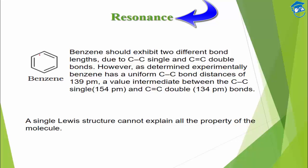Since benzene has alternate single and double bonds, it should have C–C single bond and C=C double bond. But experimentally we have found that all carbon–carbon bonds are uniform. A C–C single bond has a bond length of 154 pm, and a C=C double bond has a bond length of 134 pm, but in benzene all carbon–carbon bonds are equivalent at 139 pm — somewhat in between.